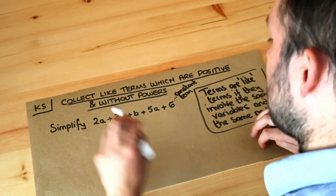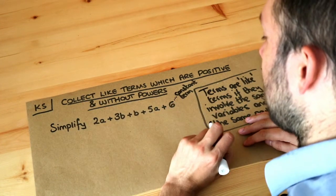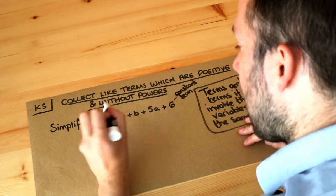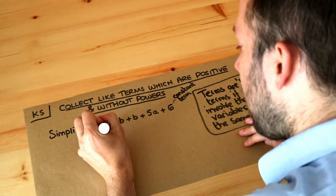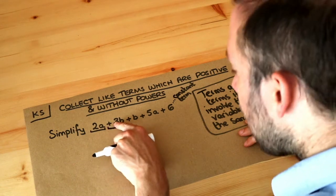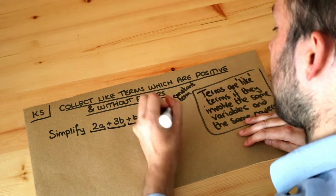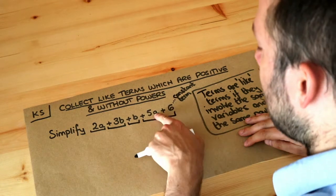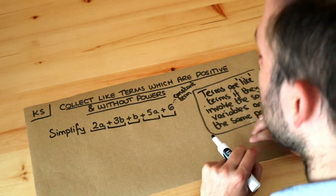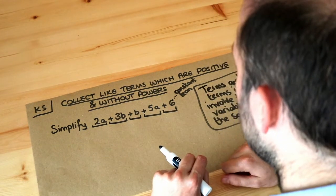What some students like to do is underline each of the terms before they collect them together. Underline each term and if you have a plus or minus symbol, include that before the term — so it's plus 3b, plus b, plus 5a, plus 6. Including the sign before each term makes it slightly easier to match up the like terms.